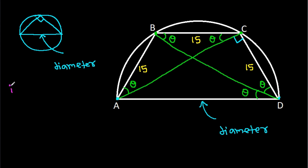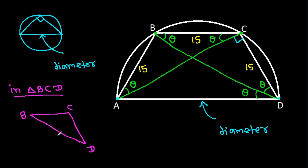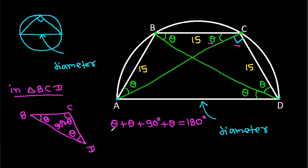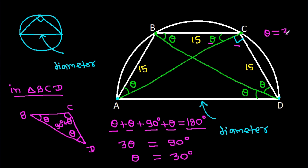Now in triangle BCD, we have angle theta, angle theta, and angle (90° + theta). So theta plus theta plus 90 degrees plus theta equals 180 degrees, giving us 3 theta equals 90 degrees, so theta equals 30 degrees.